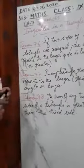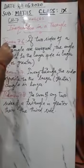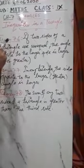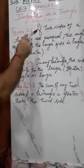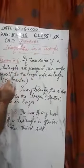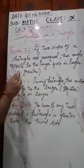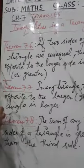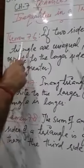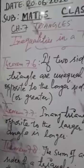Here are some theorems I have written. Inequalities in a triangle, number 7.6 of your textbook. If two sides of a triangle are unequal, the angle opposite to the longer side is larger or greater. Please remember this is the first inequality in a triangle.